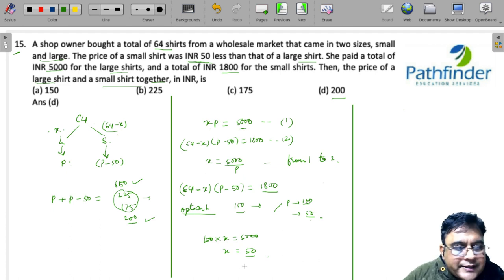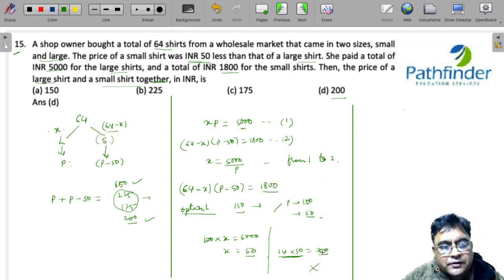Now the moment you get X as 50, what is X? X is the number of large shirts. So immediately you see that the number of small shirts should be 14. And check backwards: 14 into 50 gives me 700. So this is nothing but the total cost of small shirts, but that is given to be 1800. So just cancel it, this can't be your answer.